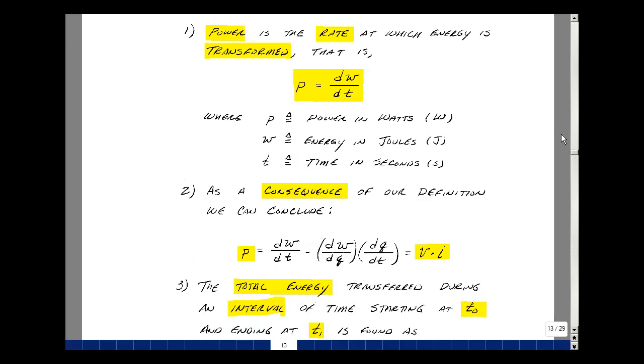Now as a consequence of this definition and our previous definitions of voltage and current, we can show a relationship with power. Again, power is the change in energy per change in time. Voltage is the change in energy per change in charge, and current is the change in charge per change in time. The delta Qs cancel, and you get change in energy per change in time, and again that's voltage times current. So power is voltage times current.